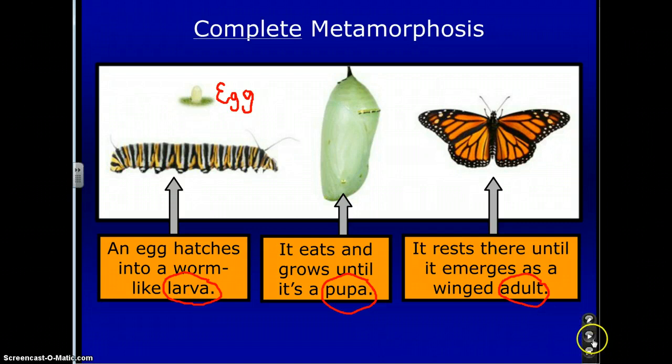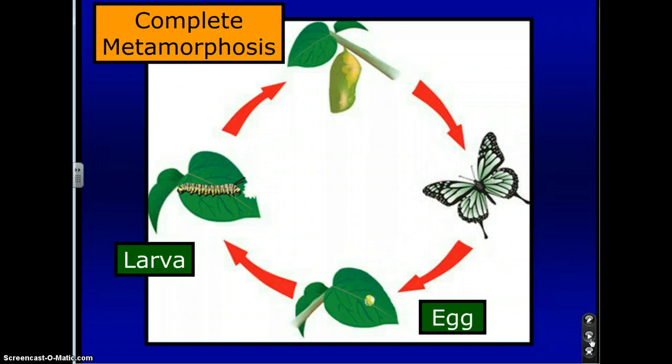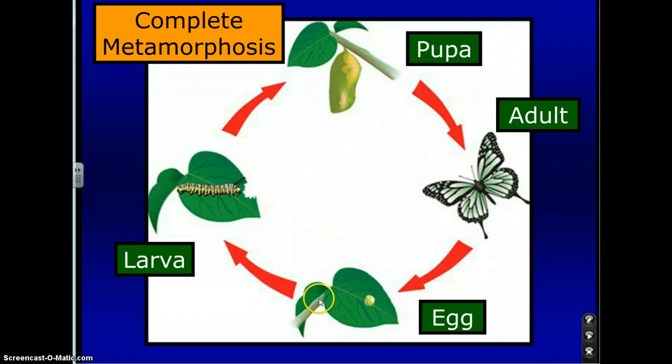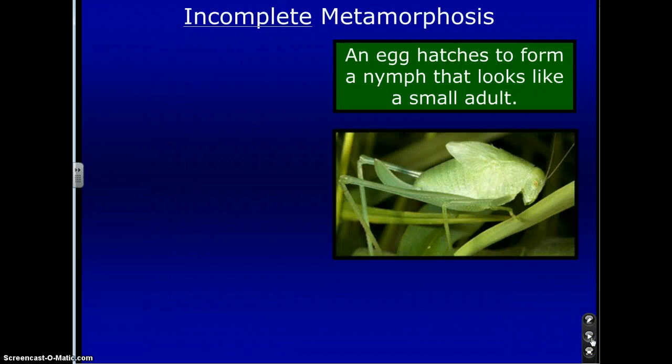For complete metamorphosis, we can see the diagram posted right here. You have the egg, the larva, the pupa, and the adult. Like everything in science, it's all a cycle. You go from your egg — laid by the adult — turning into the larva, then the pupa, and finally the adult.